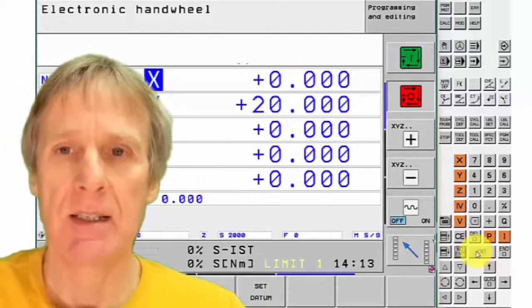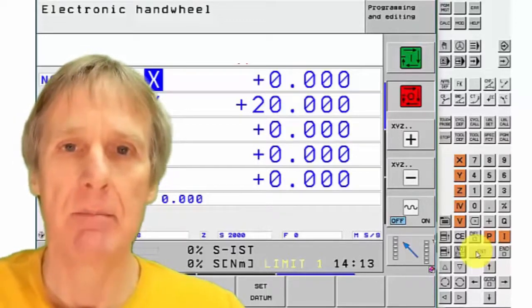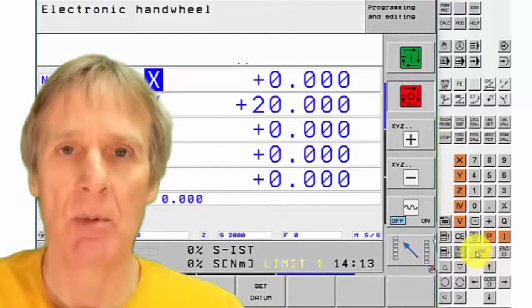The other way of doing it is if you know you're five millimeters away from the job, then physically move it that far so you can see it on the edge of the job and then zero the display up.